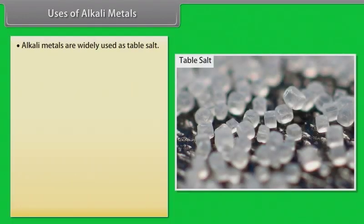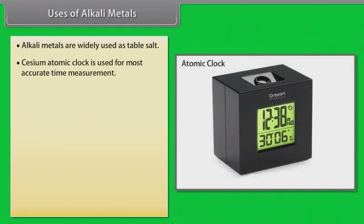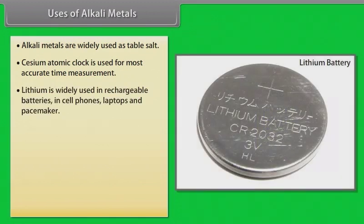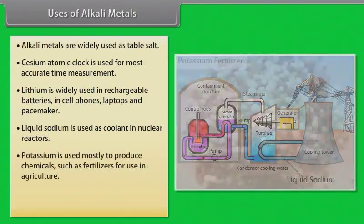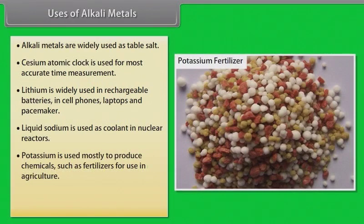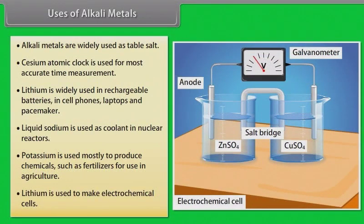Uses of alkali metals. Alkali metals are widely used as stable salt. Cesium atomic clock is used for most accurate time measurement. Lithium is widely used in rechargeable batteries in cell phones, laptops and pacemaker. Liquid sodium is used as coolant in nuclear reactors. Potassium is used mostly to produce chemicals such as fertilizers for use in agriculture. Lithium is used to make electrochemical cells.